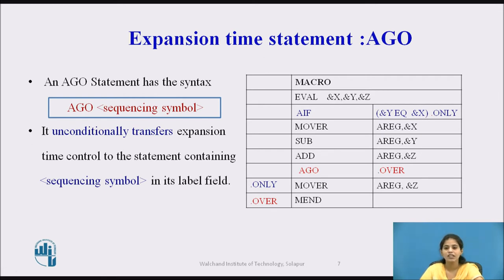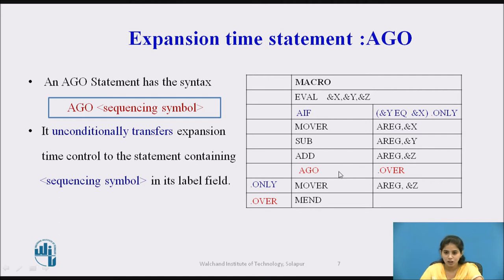In the example, the name of the macro is EVAL, having three parameters &X, &Y, and &Z. The AIF statement specifies the condition: if &Y EQ &X is true, control is transferred to the sequencing symbol .ONLY; otherwise control goes to the next statement MOVE. After that SUB and ADD execute, then control reaches the AGO statement, which unconditionally transfers control to the sequencing symbol .OVER.